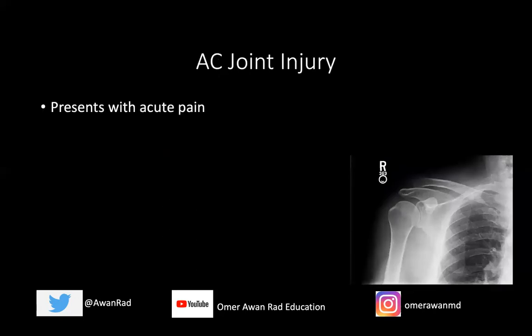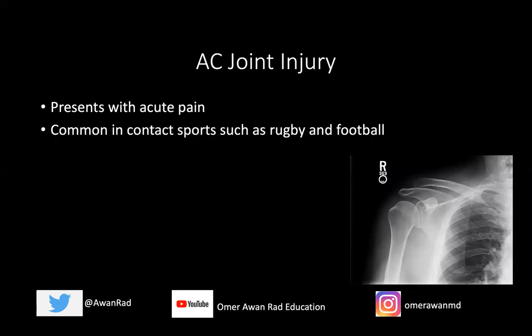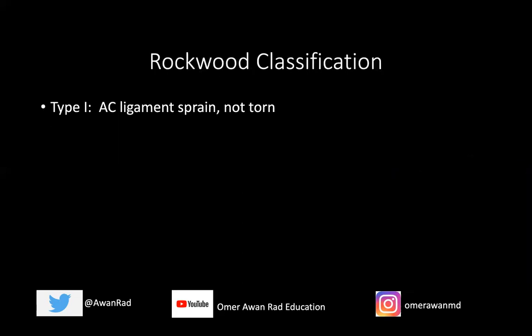This is an AC joint injury that often presents with acute pain around the shoulder. It's common in contact sports such as rugby and football. There is a Rockwood classification of AC joint injury that divides this injury into six different types, which we'll talk about now.